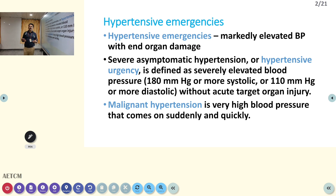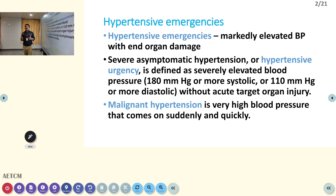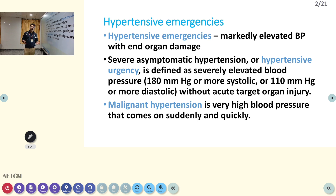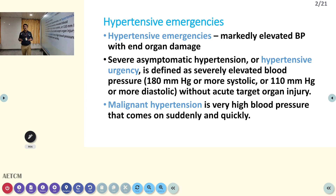BP is approximately 180 mmHg systolic and 110 mmHg diastolic without acute target organ injury. Sometimes, remember, it may not be evident — the patient may have some kidney disorder or small cardiac failure we may not detect. Suddenly the patient will deteriorate — that is hypertensive urgency. Malignant hypertension means BP is very high, comes all of a sudden, and all catastrophic features can be present.